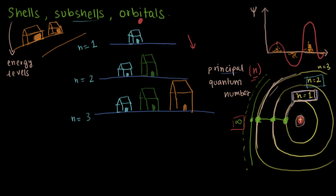The bigger the houses get, the more rooms they have. I've just drawn it for comparison - the more rooms they have. And you know what that means? That means that the nearer you are to the nucleus, the less number of electrons there are. The farther you go, the more number of electrons. Now, these houses represent our subshells - these are types of subshells, different types of subshells.